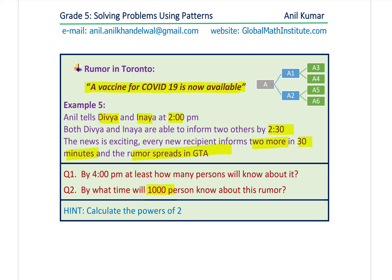The rumor — a vaccine for COVID-19 is now available — was only known to Anil Kumar. Then he shared this information with two persons at 2:30. Within 30 minutes, these two persons informed two more, so now four additional people know about the rumor. We're saying that every 30 minutes, two more will be informed by each new recipient of the rumor. Then within the next half an hour, these two new recipients will also inform two others, and this way the tree grows and so many people in GTA will know about this rumor.